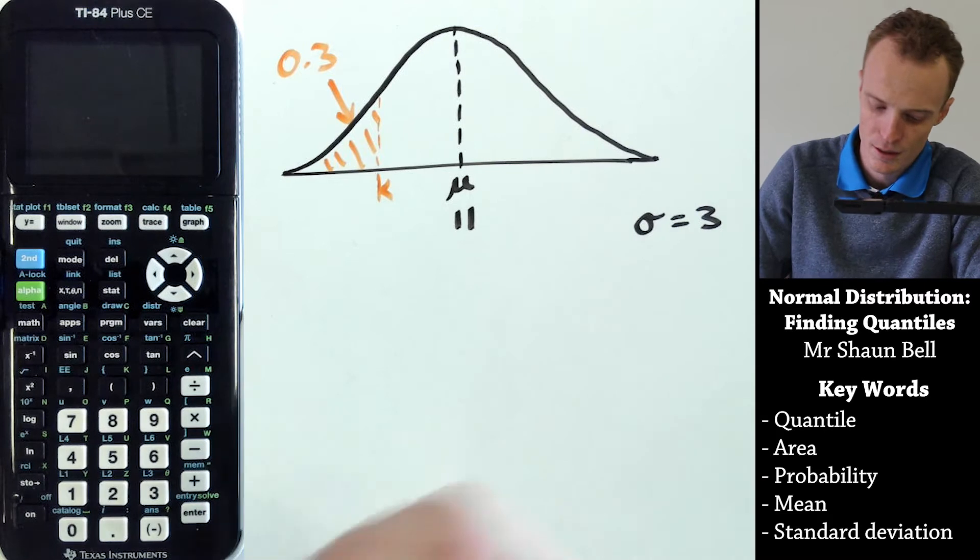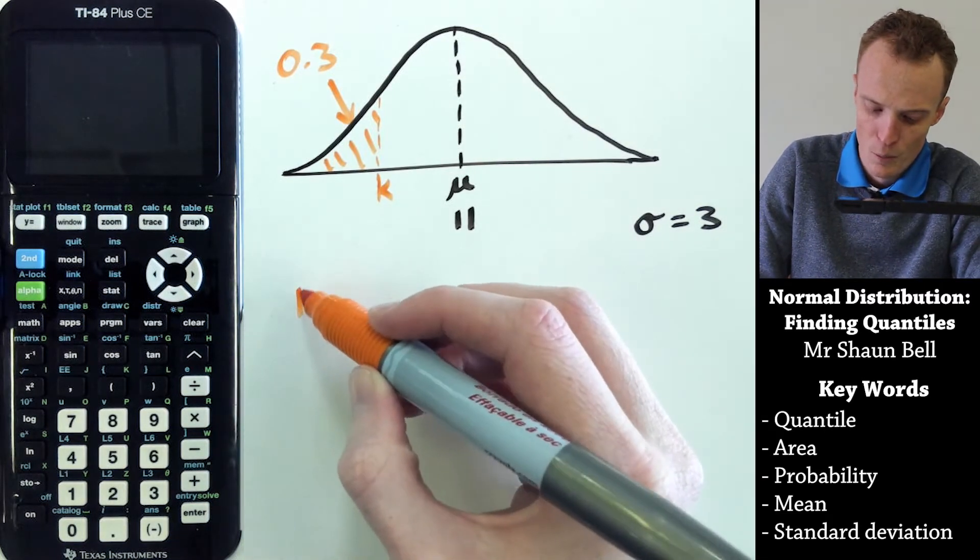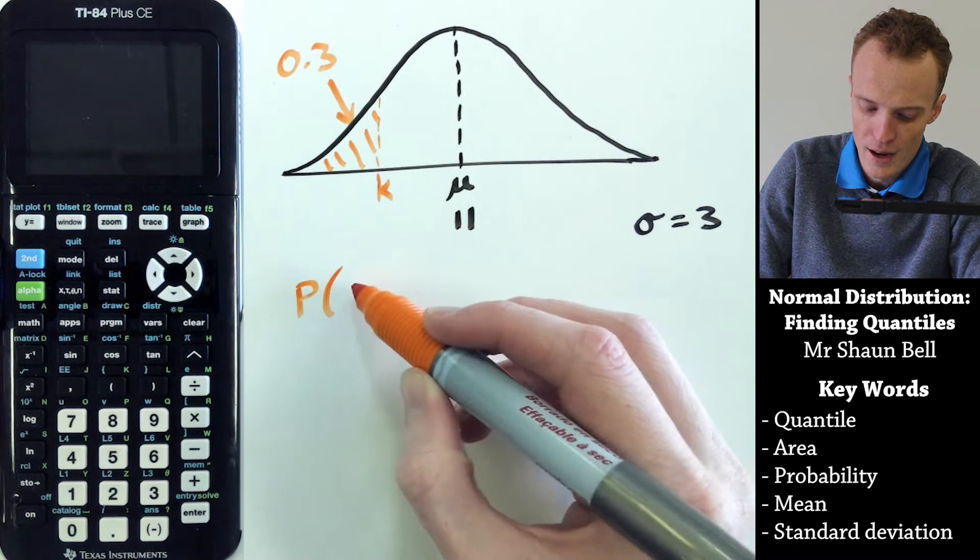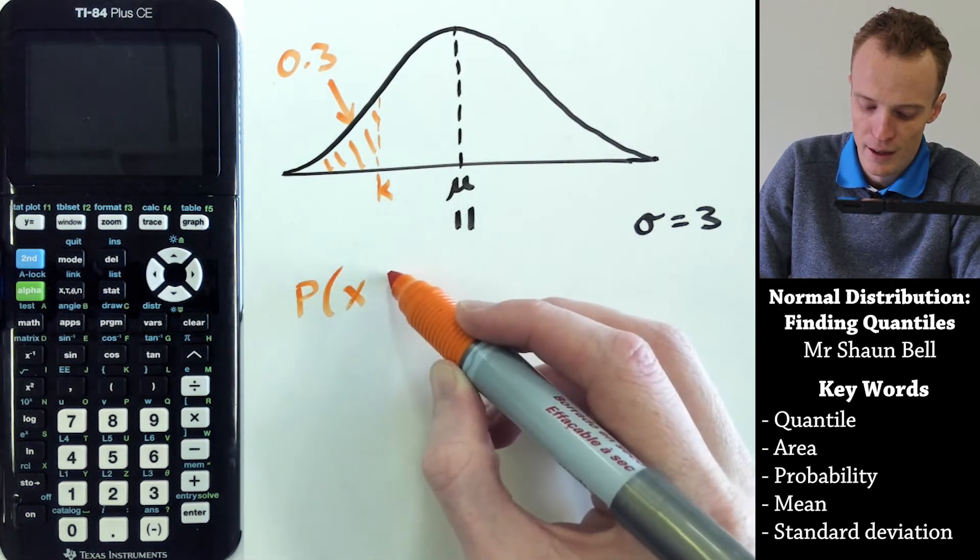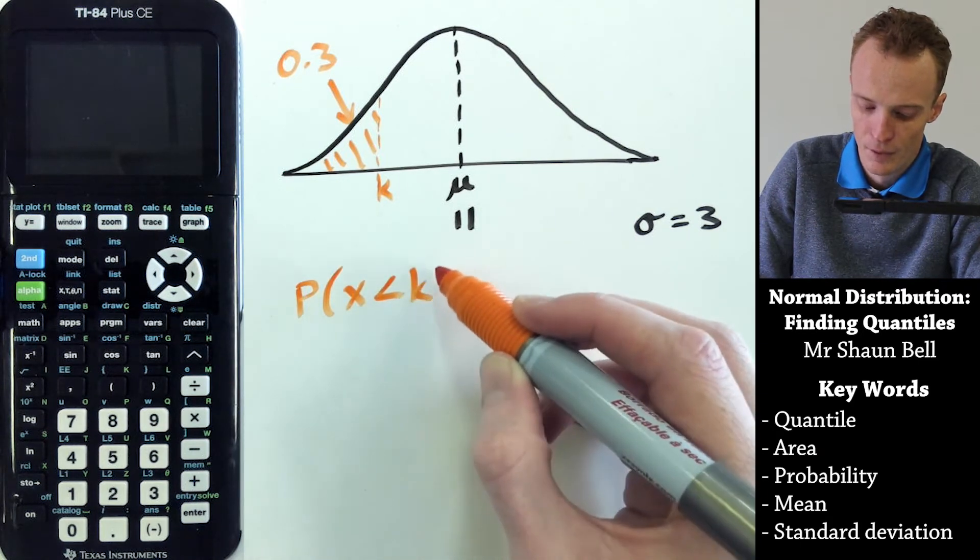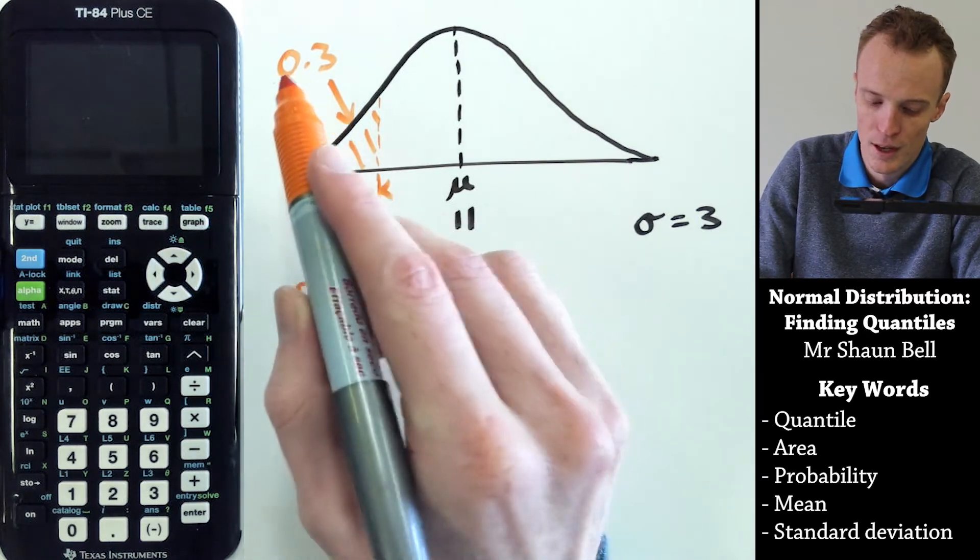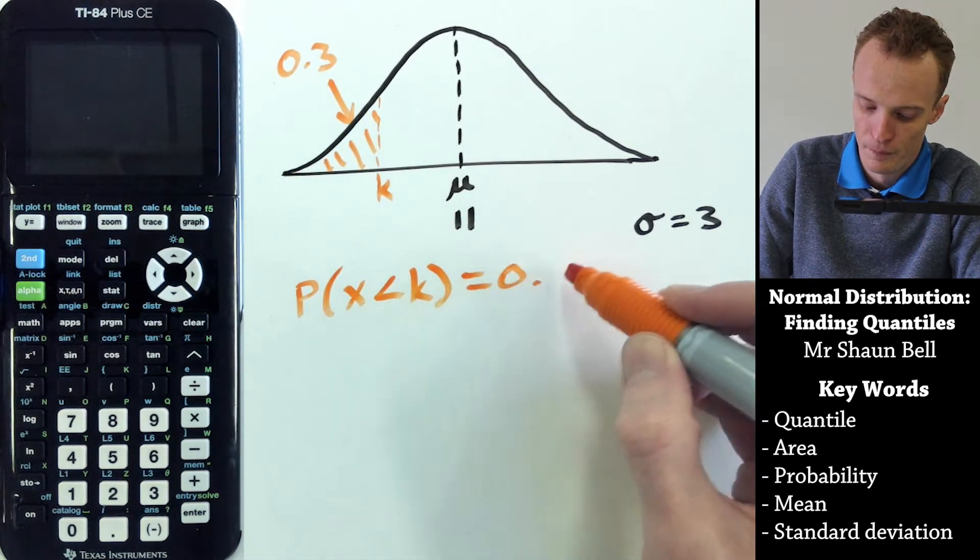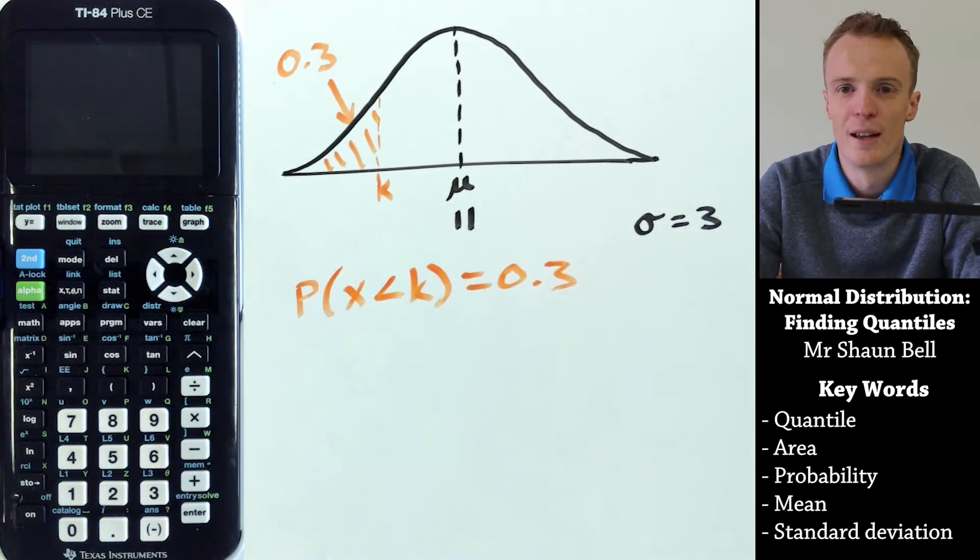One way we can do this is to think about it as we're trying to find where the probability of our X value being less than K is equal to 0.3, and we're solving for K.